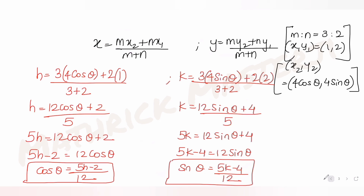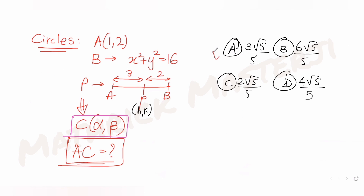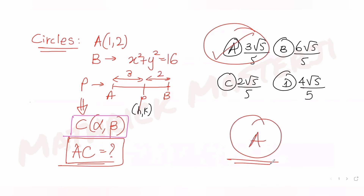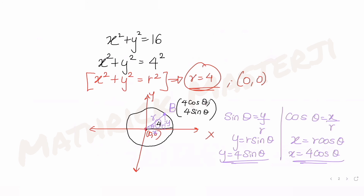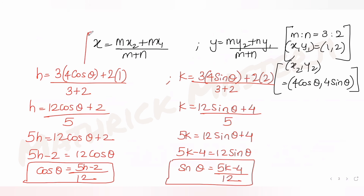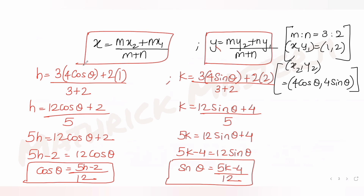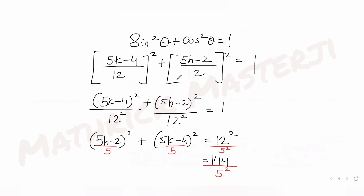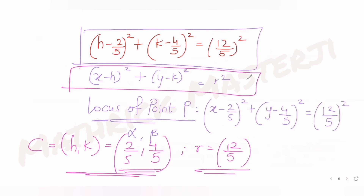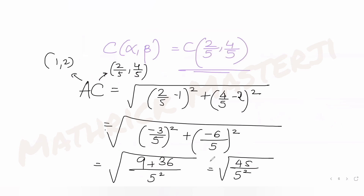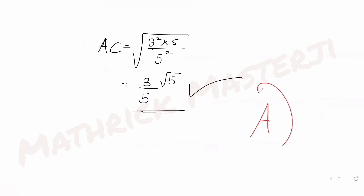The answer matching the question is option A. To summarize: we found coordinates of B as (4cosθ, 4sinθ), applied the section formula, found the locus of P as a circle with center C = (2/5, 4/5), then calculated the distance AC = 3√5/5. Option A is the correct answer.